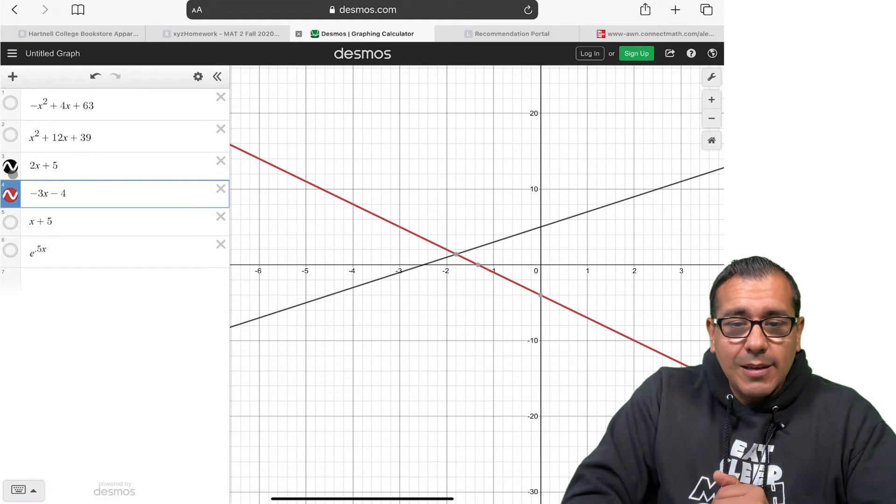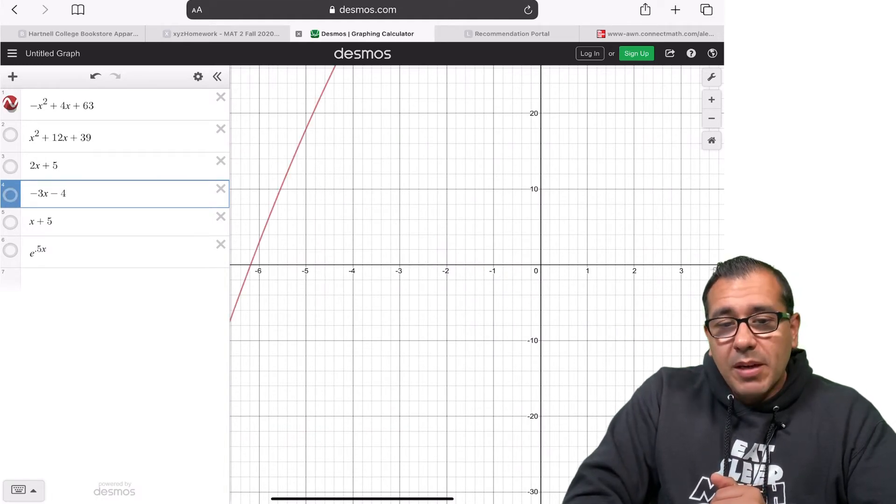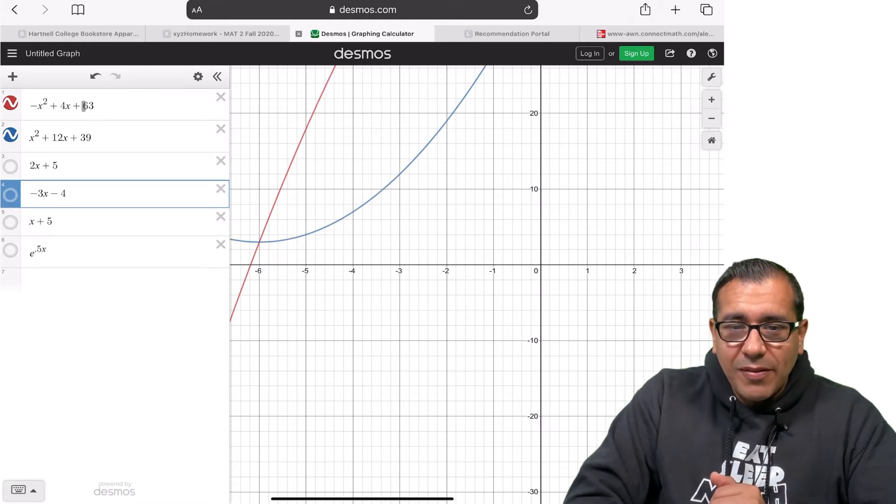So let me unhighlight these. Let me get rid of these. And let's take a look at these two functions. They happen to both be parabolas here. So I graph them.